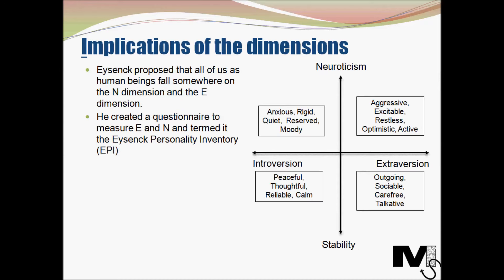Eysenck proposed that all of us as human beings fall somewhere on the N-dimension and the E-dimension, and this will determine what traits we possess, which then defines our personality. As you can see from the graphic, if you're between extroversion and neuroticism you'll be aggressive, excitable, restless, etc. There are other traits for each quadrant — outgoing, sociable, carefree, etc. Depending on where you lie on the N-scale and E-scale, you'll be in one of the four quadrants, and that defines your traits and personality. He created a questionnaire to measure these E and N values, termed the Eysenck Personality Inventory, EPI.